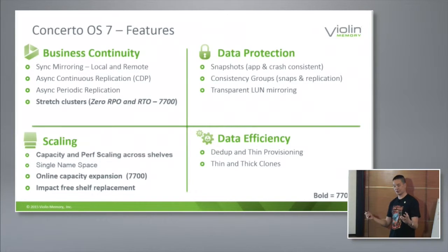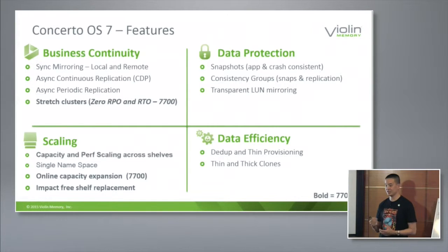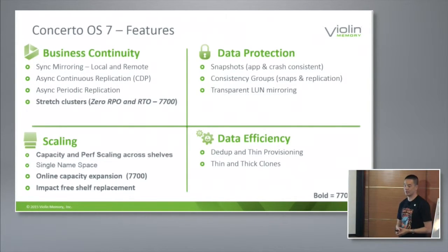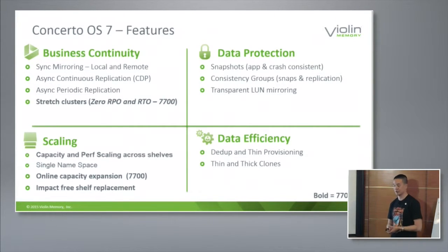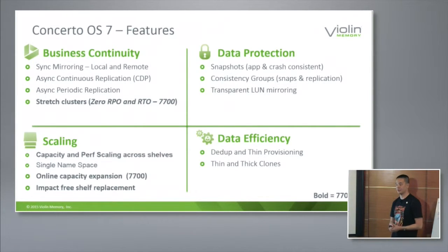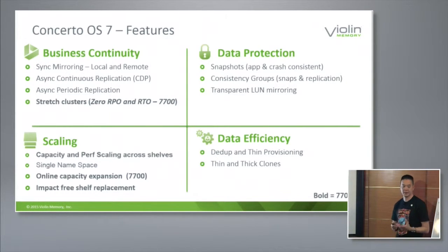We also introduced beyond our traditional single form factor array a modular scale-up solution that allows the consolidation of capabilities from multiple arrays, enabling us to achieve a scale in a single array of 700 terabytes of raw capacity, and then through data reduction over two petabytes of effective logical capacity. This is really important in terms of large-scale consideration — if you're looking to take out a traditional infrastructure, you can't have a small array. It's very important to be able to hit that petabyte scale seamlessly, non-disruptively, and scalably.